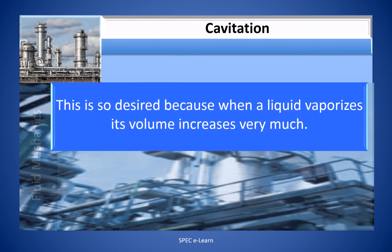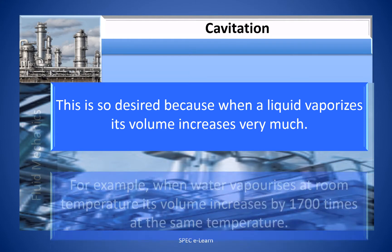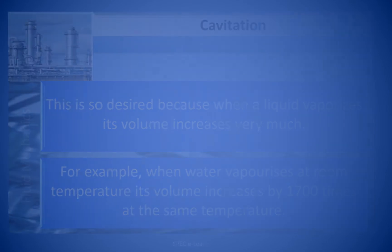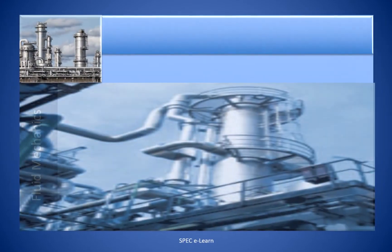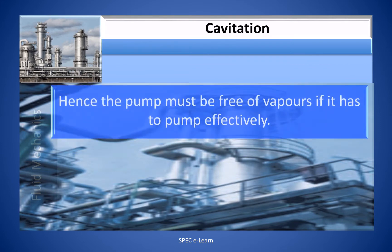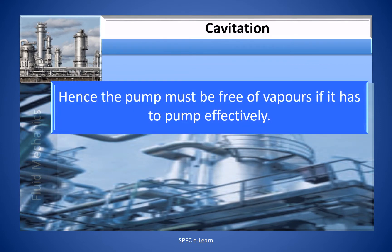Vaporization is undesirable because when a liquid vaporizes, its volume increases very much. For example, when water vaporizes at room temperature, its volume increases by 1700 times at the same temperature. Hence, the pump must be free of vapors if it has to pump effectively.